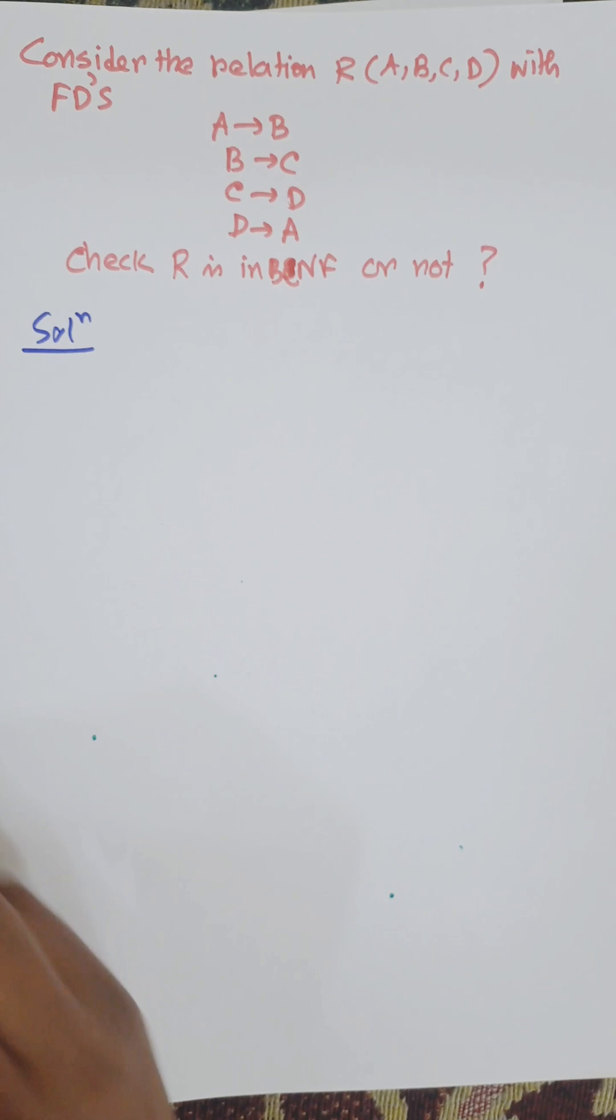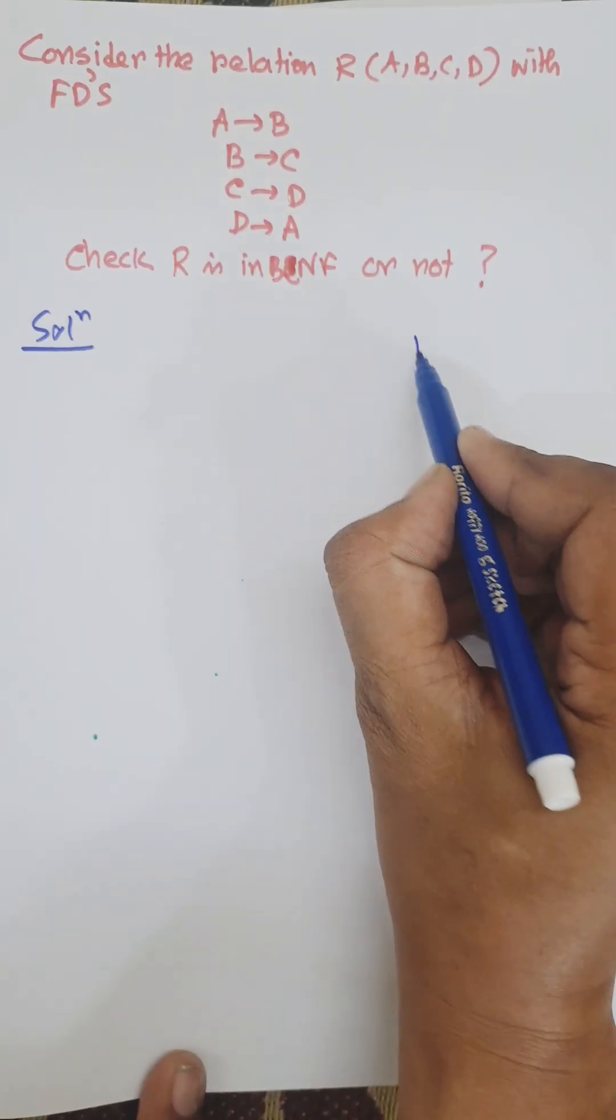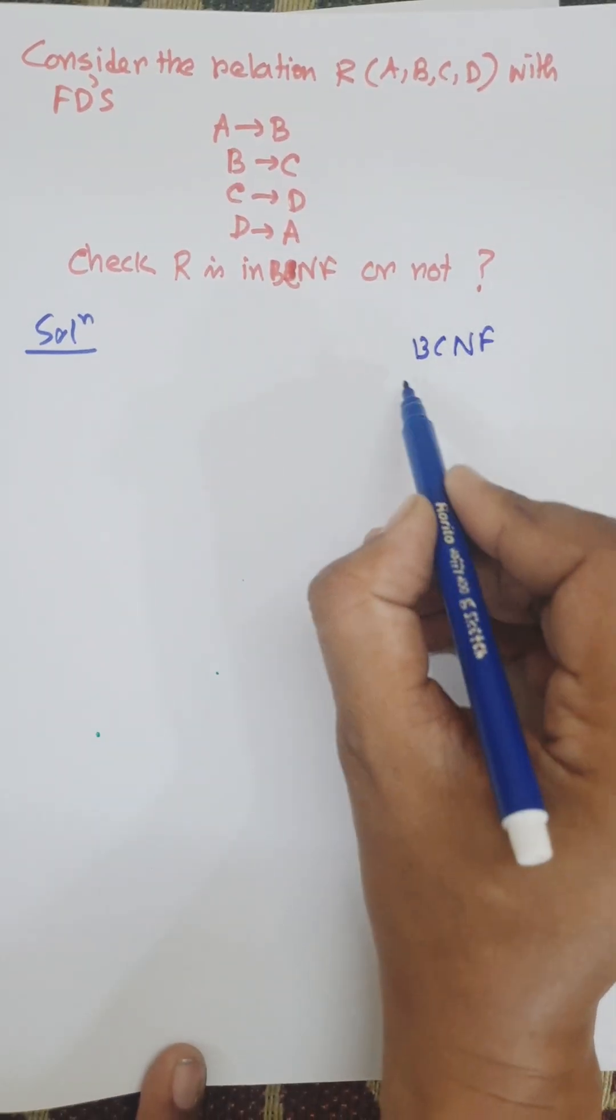First of all, we need to know what is BCNF. BCNF is Boyce-Codd Normal Form.